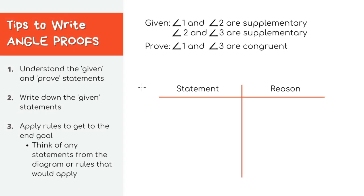For our next problem, let's work with angles. Let's first try to understand the given and prove statements. It's saying angle one and angle two are supplementary, which means that the angles add up to 180 degrees. Then it also says angle two and angle three are supplementary as well.